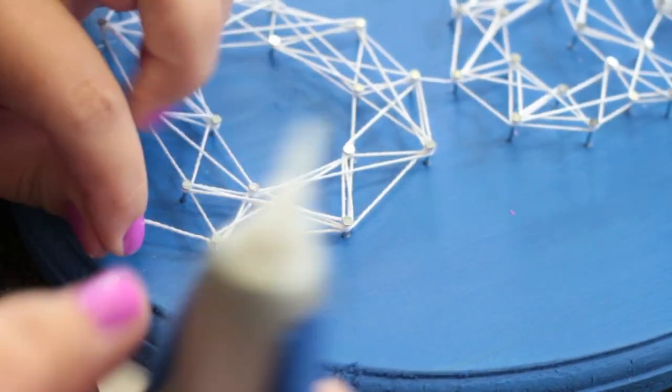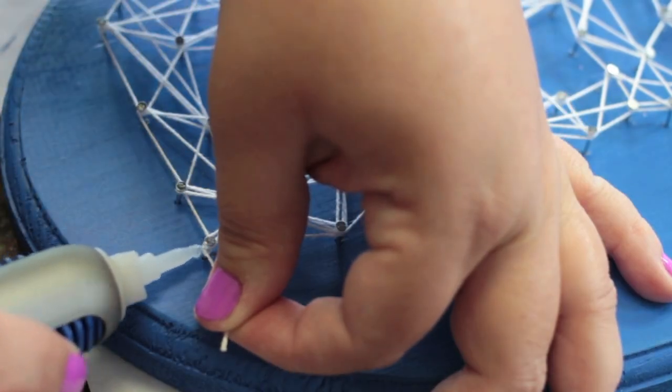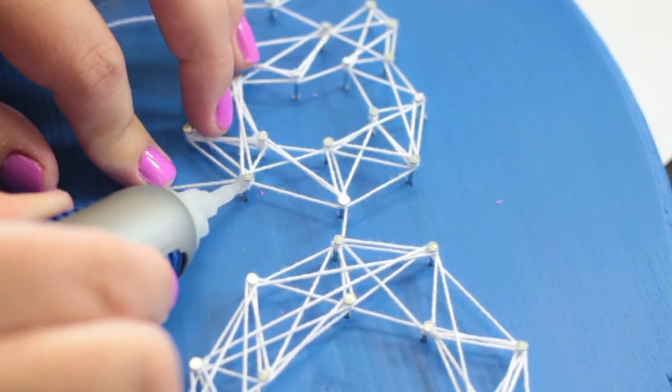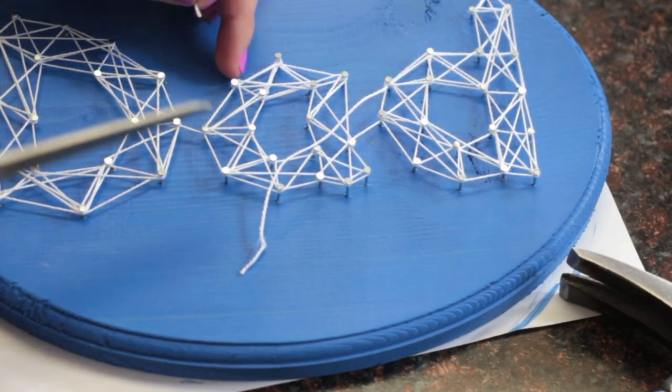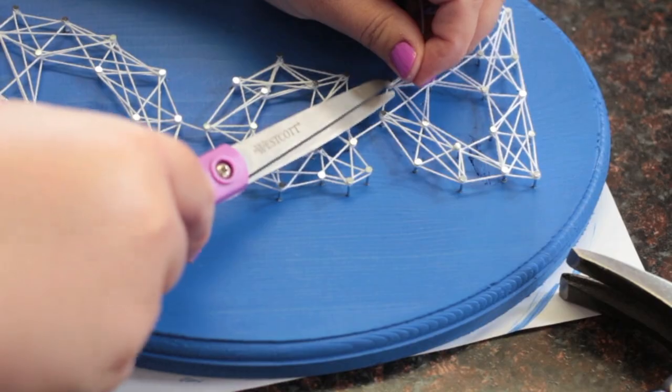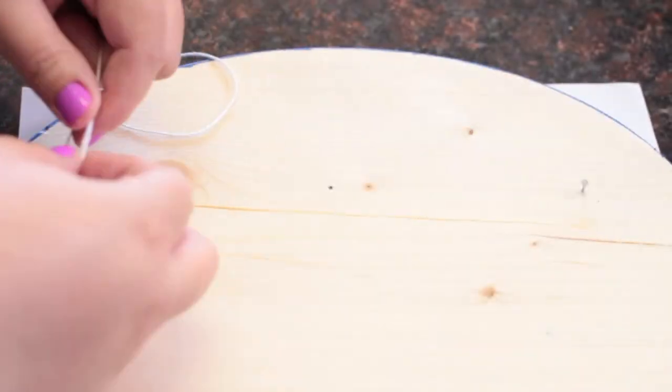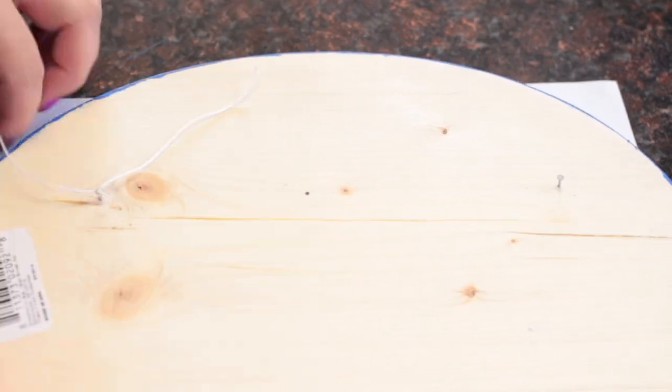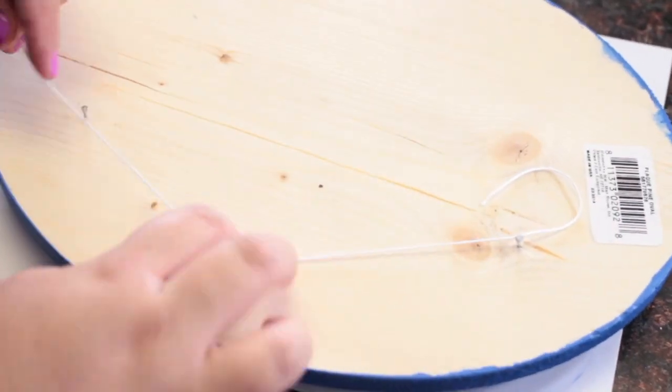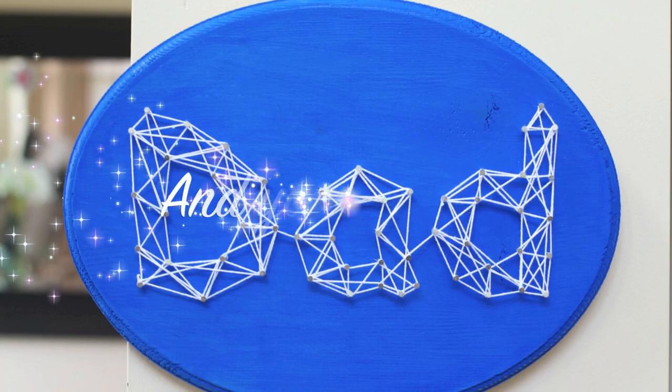Once you have everything tied off, you can use a little dab of super glue to secure each knot. Then clip off the extra floss. Flip the plaque over once more and pull up the nails a bit if needed with the hammer and use the floss to make a line to hang the plaque with. And you're done!